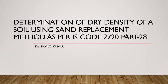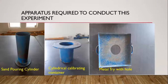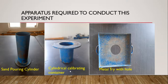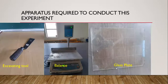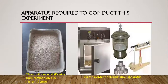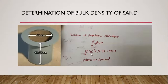Let's see the apparatus required: sand pouring cylinder, cylindrical calibrating container, metal tray with hole, excavating tool, balance, glass plate, and clean uniform sand passing 1 mm retained on 600 micron sieve, and water content determination apparatus.